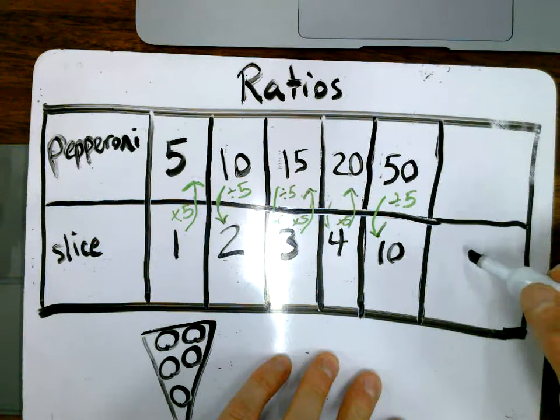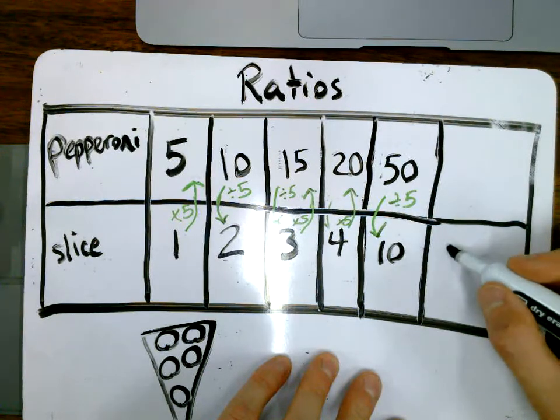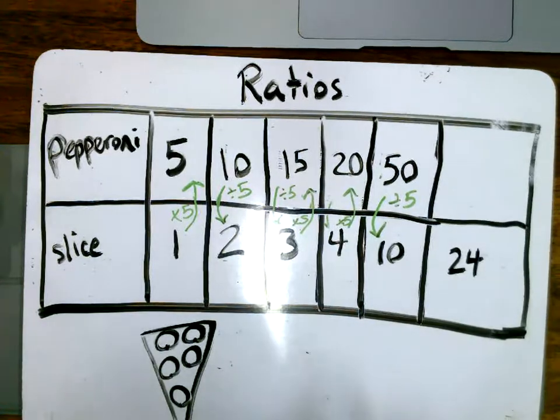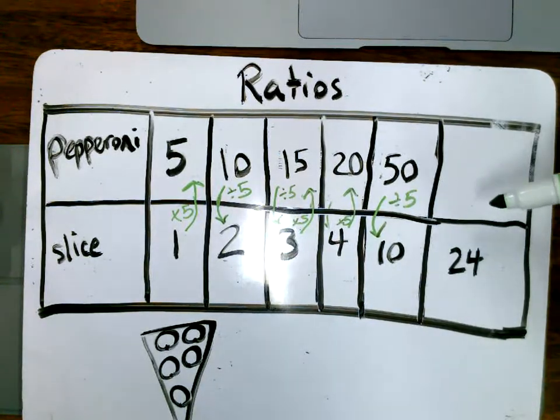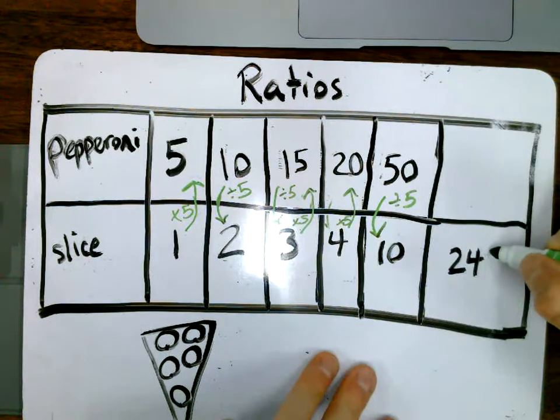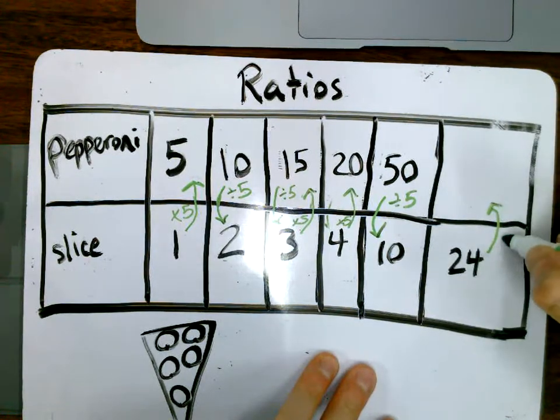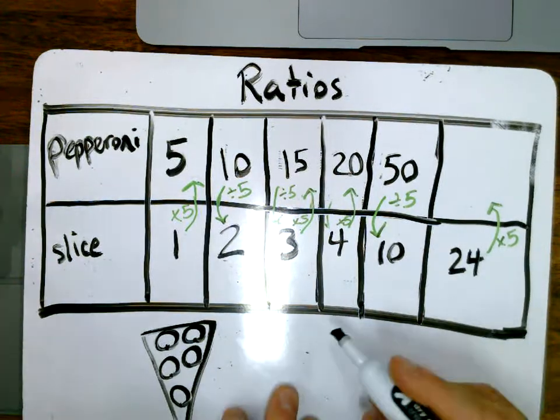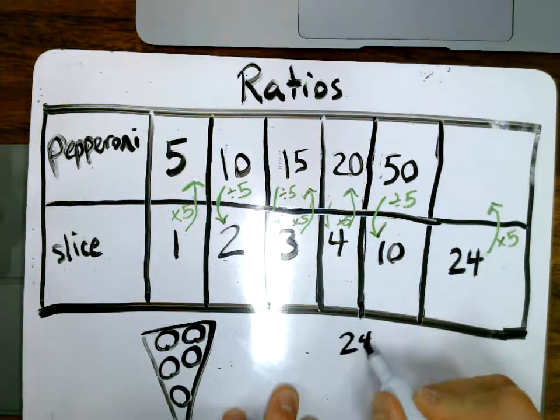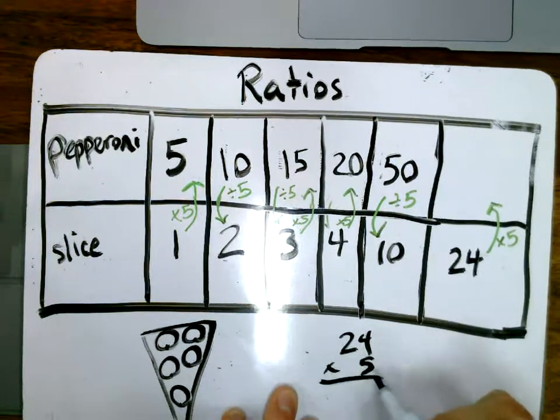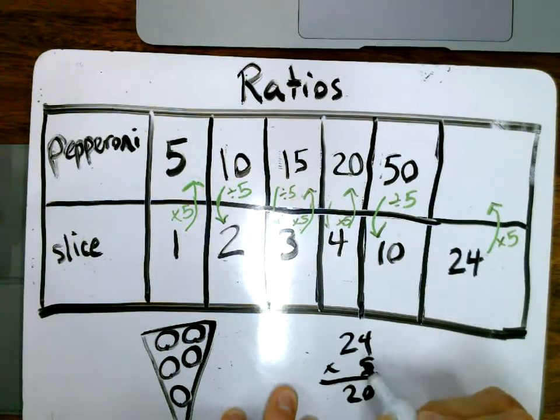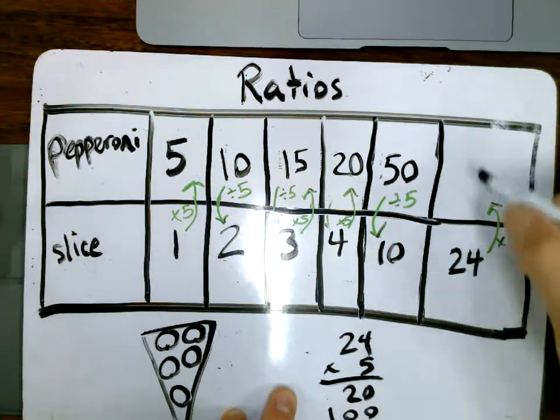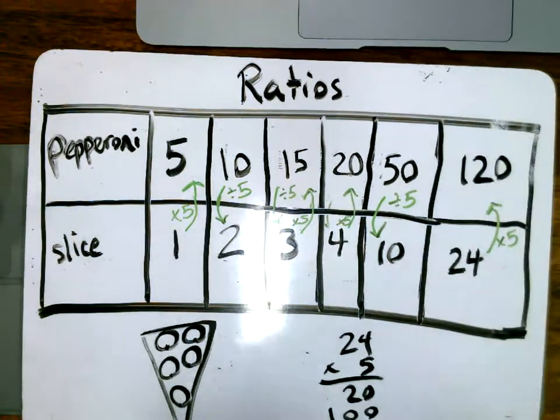And let's say we are told that we need to make 24 slices of pizza. We want to know how much pepperoni we need to go buy at the store. Well, we know that's going to be times five to get up there. So let's just figure out, we need 24 times five. I know that five times four is 20, five times 20 is 100, and that's going to be 120 pieces of pepperoni.